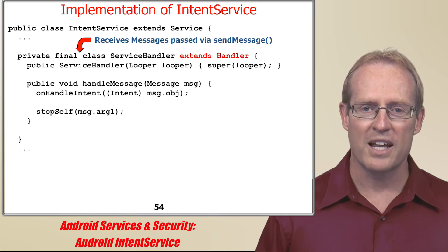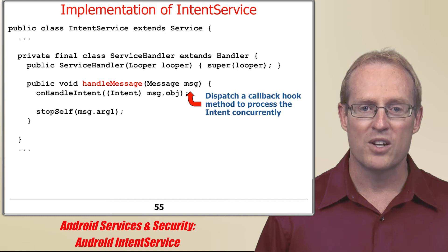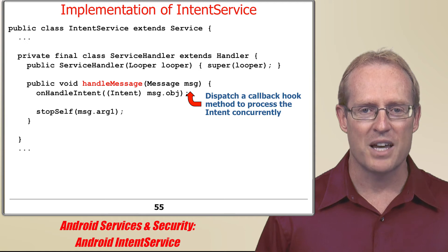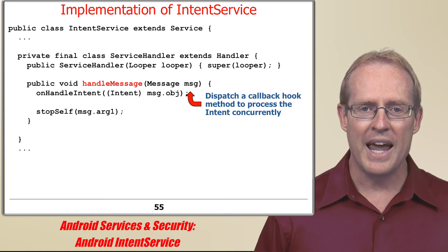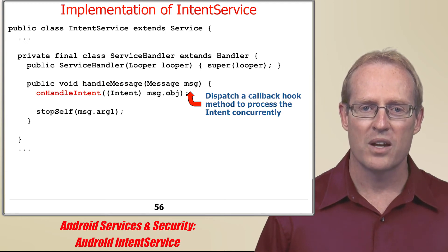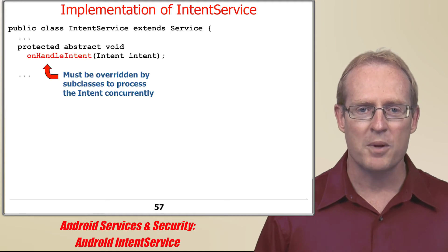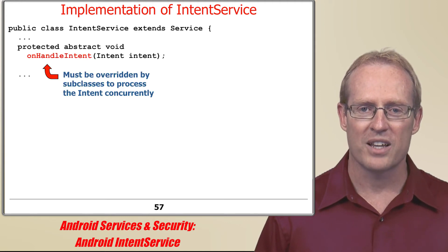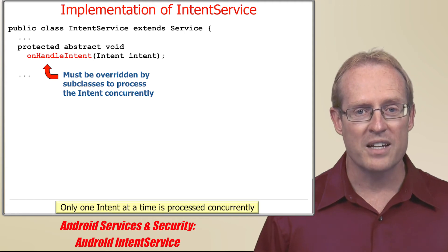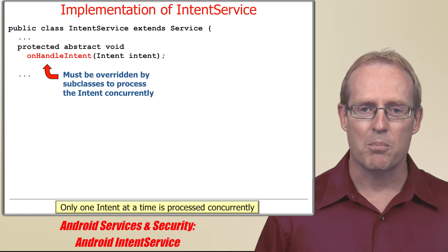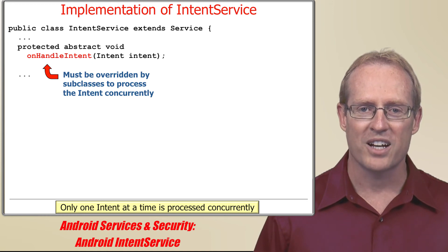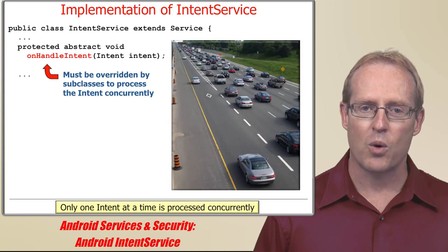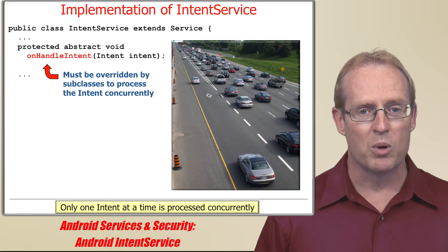Since ServiceHandler extends Handler, its handleMessage hook method runs in the context of the handler thread and receives messages passed to it via sendMessage. HandleMessage dispatches the onHandleIntent hook method, which must be overridden by subclasses of intent service to process the intent concurrently. Only one intent is processed at a time, but the processing happens in the handler thread that runs concurrently with respect to other application logic. Therefore, if this hook method runs for a long time, it will hold up other requests to the same intent service, but will not hold up anything else.